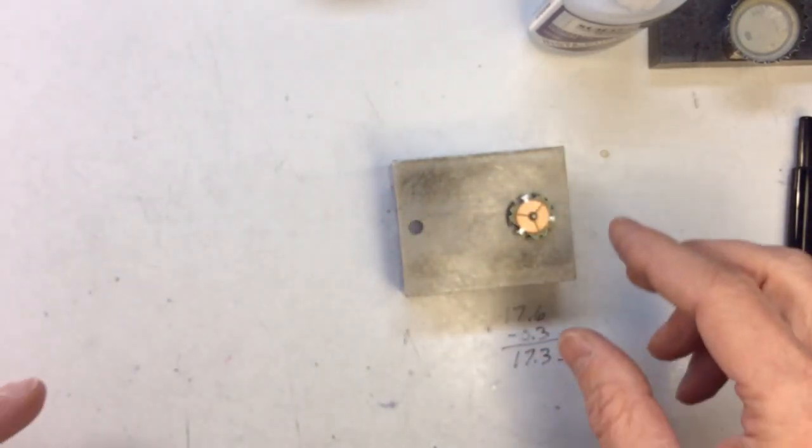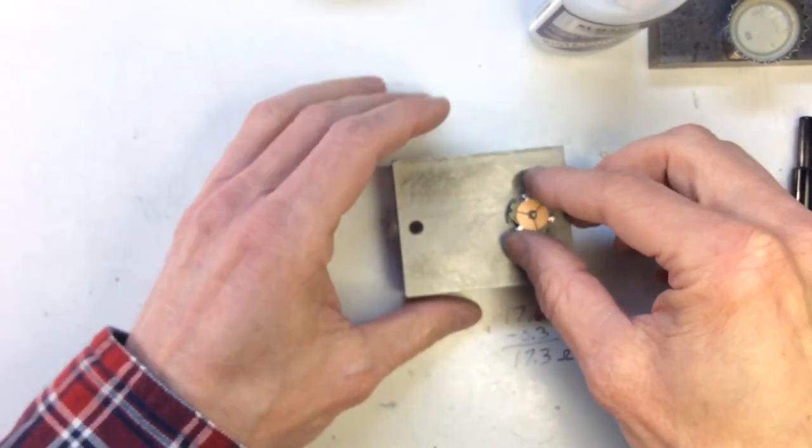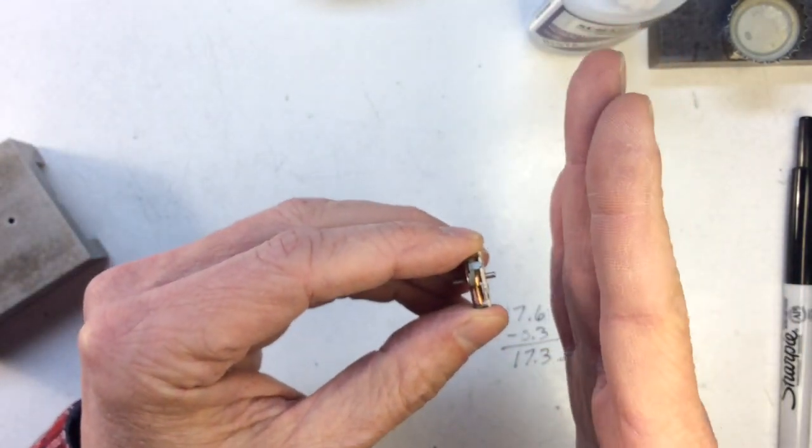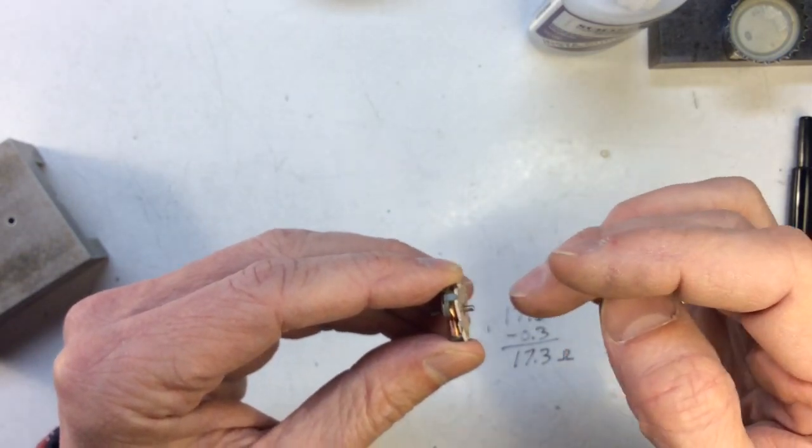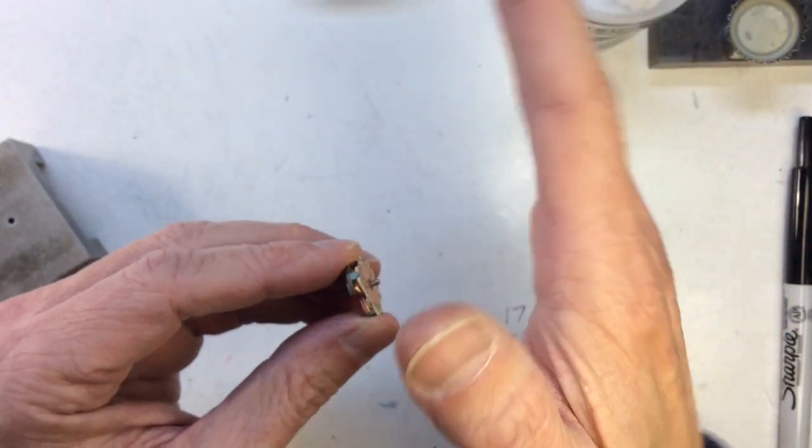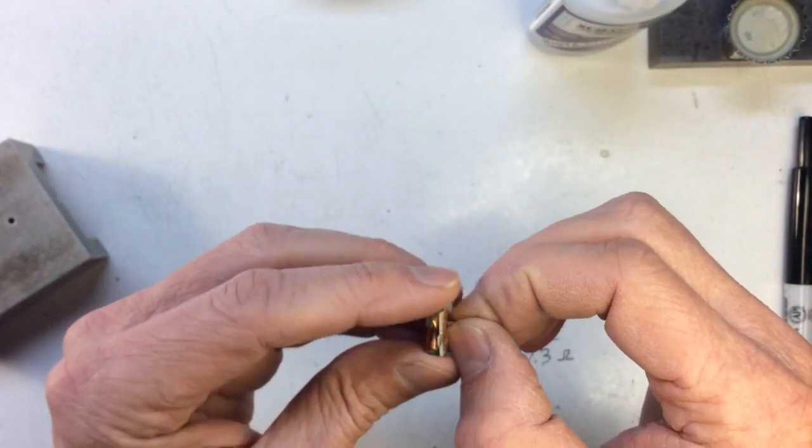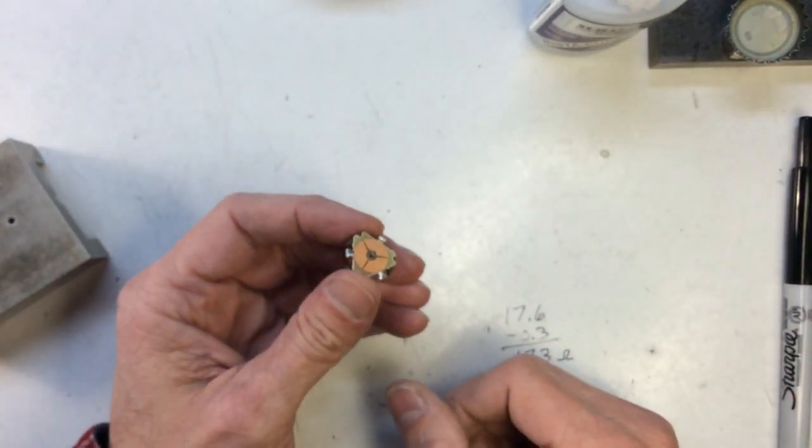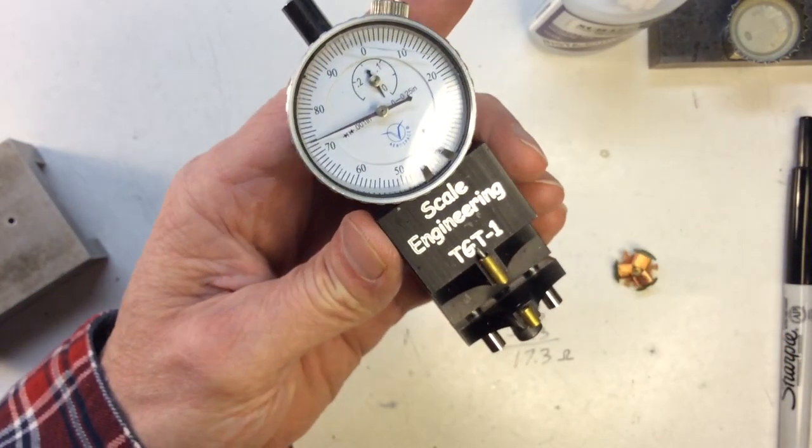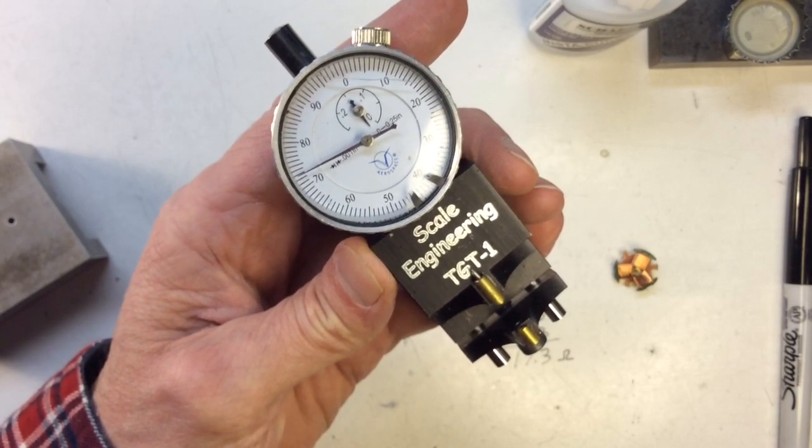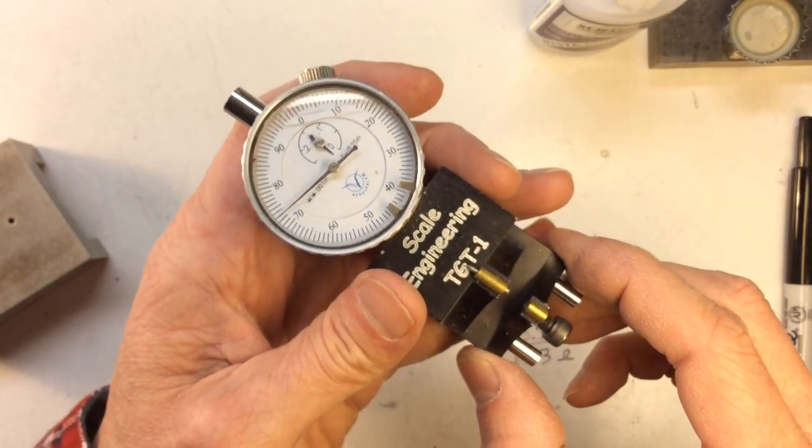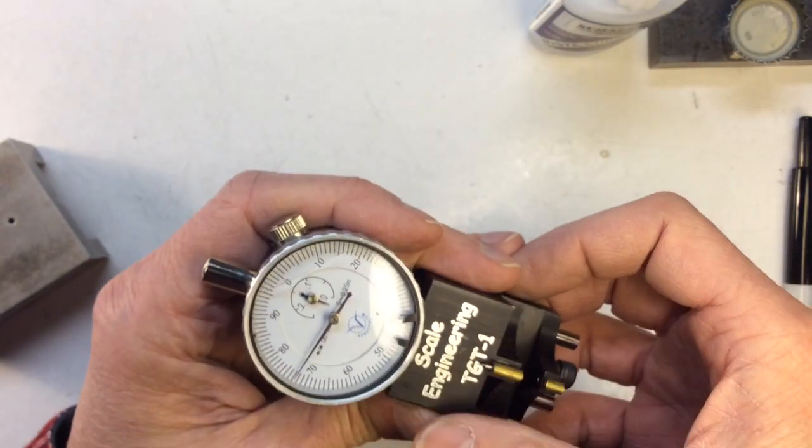The next thing we want to do is check the commutator runout. Ideally you want the commutator runout to be running as flat as possible. If the commutator's wobbling like crazy, you're going to lose contact, those brushes will wear funny, and you're obviously going to be missing speed. The tool to use is this handy little TGT1 made by Scale Engineering. Mark at Scale Engineering does some good stuff, and this is a really nice tool. It's perfect for this little task, and I think it's the only thing available that'll do this unless you want to make your own.